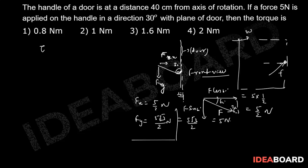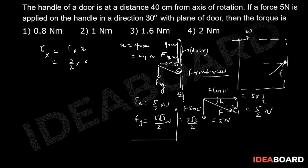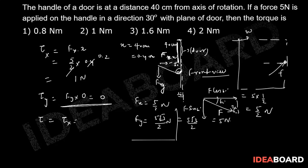Now for torque calculation: torque due to Fx equals Fx into the perpendicular distance from the axis of rotation, which is 40 centimeters = 0.4 meters. So torque_x = (5/2) × 0.4 = 1 newton-meter. Torque due to Fy will be zero because Fy passes through the axis of rotation. So the final torque equals 1 newton-meter.